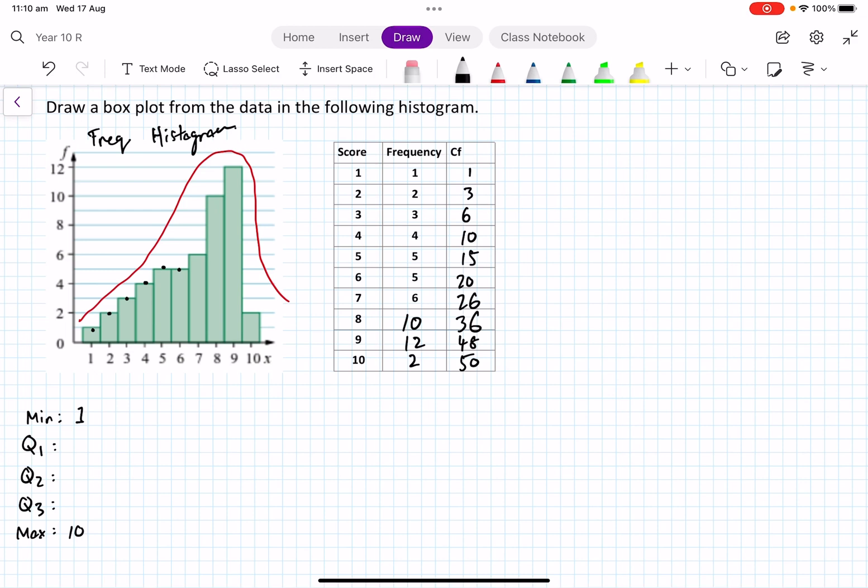Now remember that's the frequency. My five number summary is over here. My minimum score is one, that's my lowest score. The maximum is 10. Where's my median? Basically 50 divided by 2 equals 25.